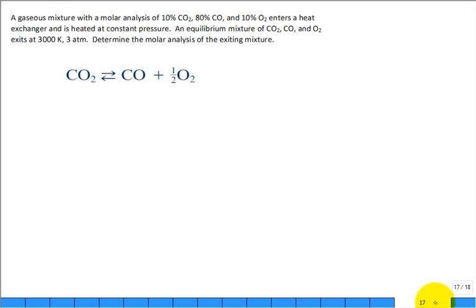Well, what I want to do is leave you enough time so that you can work on a problem. I want you to work on this problem. The 9 o'clock, they weren't doing too good. They were like, it's been a long time. So if we have a gaseous mixture that has a molar analysis of 10% carbon dioxide, 80% carbon monoxide, 10% oxygen, it's not in anything associated with equilibrium, but it enters a heat exchanger and is heated at constant pressure, such that it's at 3,000 Kelvin and 3 atm, and it comes out as an equilibrium mixture of carbon dioxide, carbon monoxide, and oxygen at that temperature and pressure. Can you determine the molar analysis of the exiting equilibrium mixture?